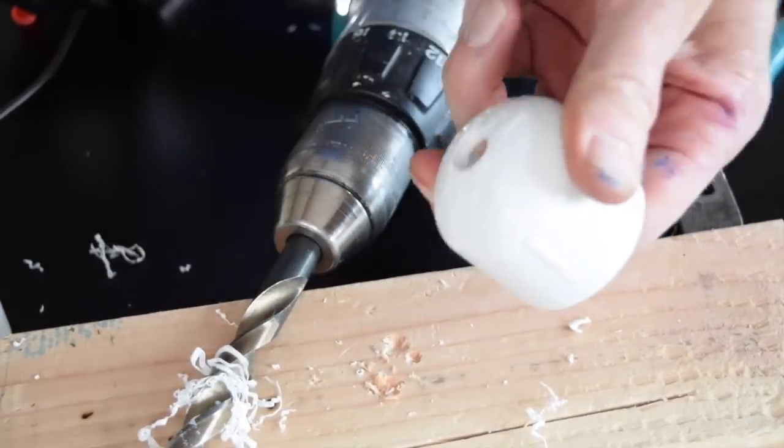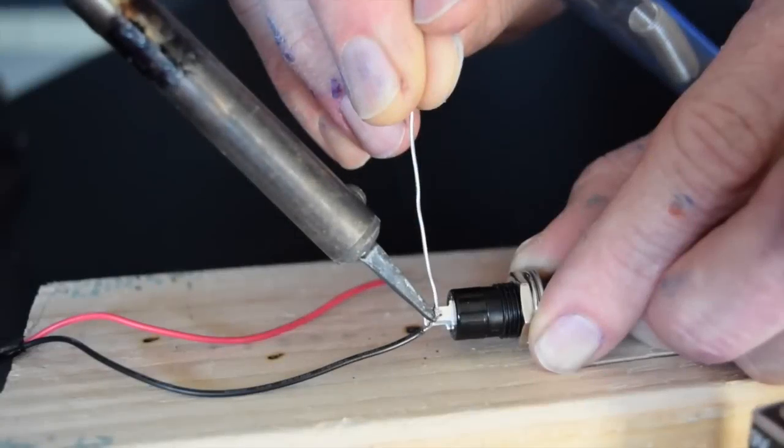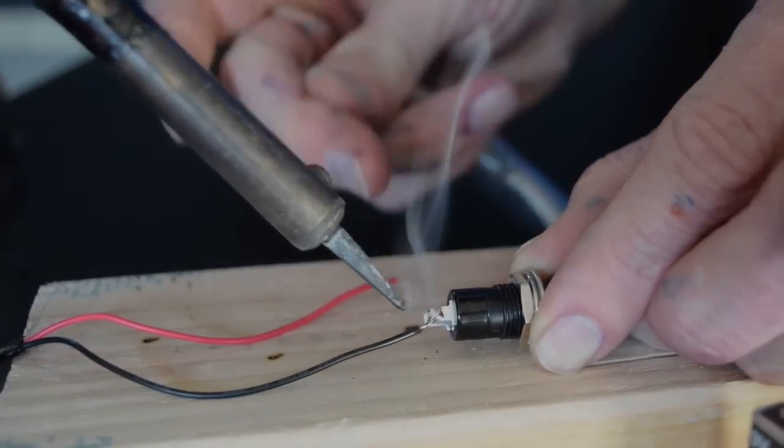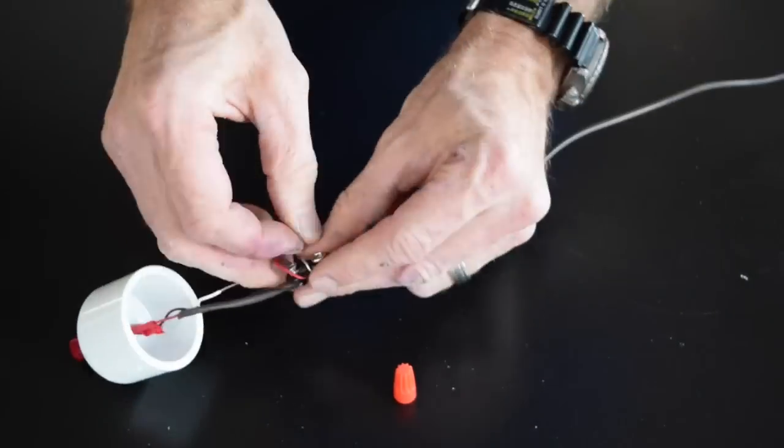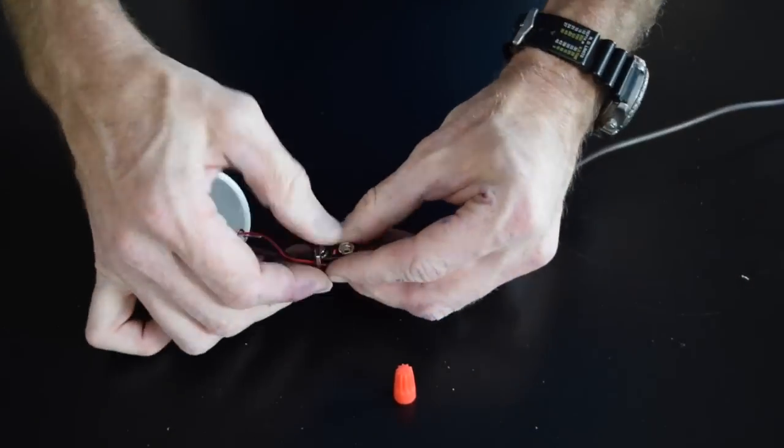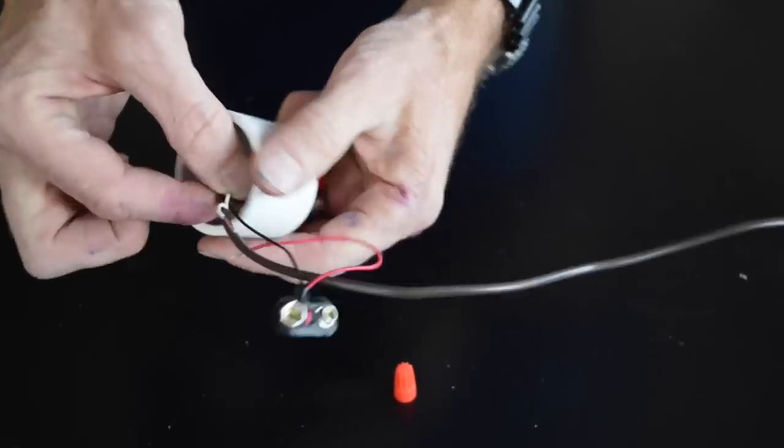A hole was drilled into one cap so the switch would fit into it. After test fitting the switch, I soldered the wires to the switch and then fed the wires through the hole in the cap. I threaded the terminal connector and wires through the lock nut and then tightened the lock nut on the inside of the cap.